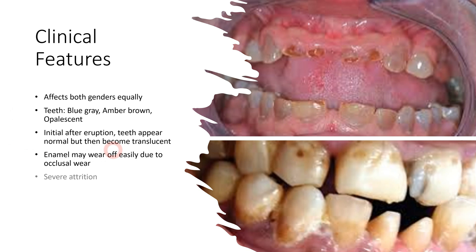Patients suffering from dentinogenesis imperfecta report severe attrition because enamel and dentine both wear off easily. You can see teeth worn almost to the gum line compared to the normal occlusal level. Attrition can be local or, in advanced cases, generalized throughout the dentition.